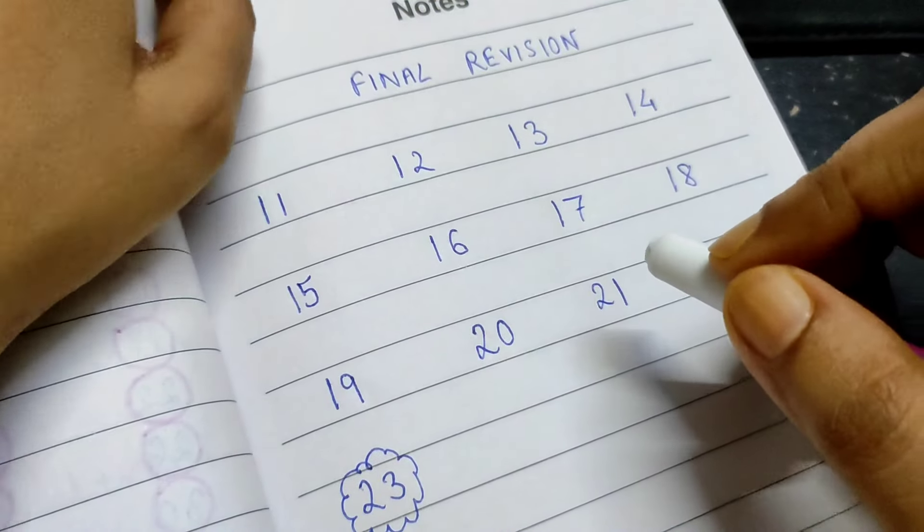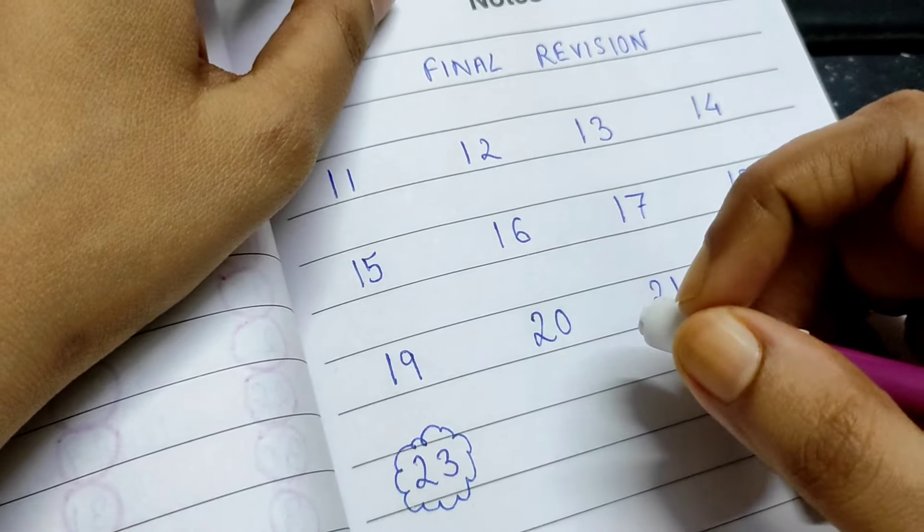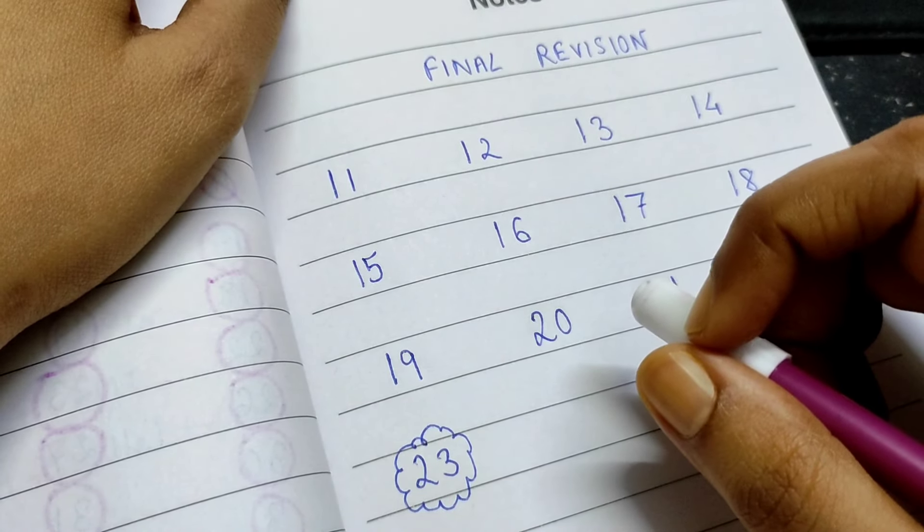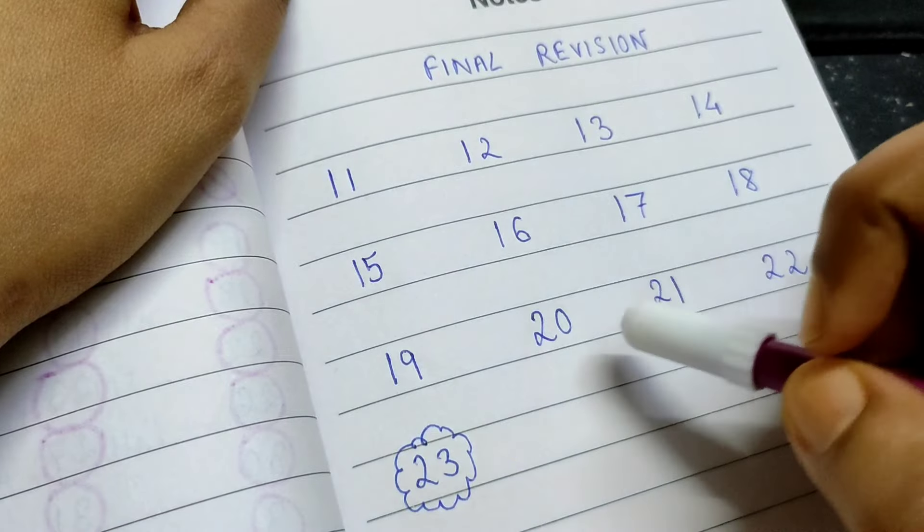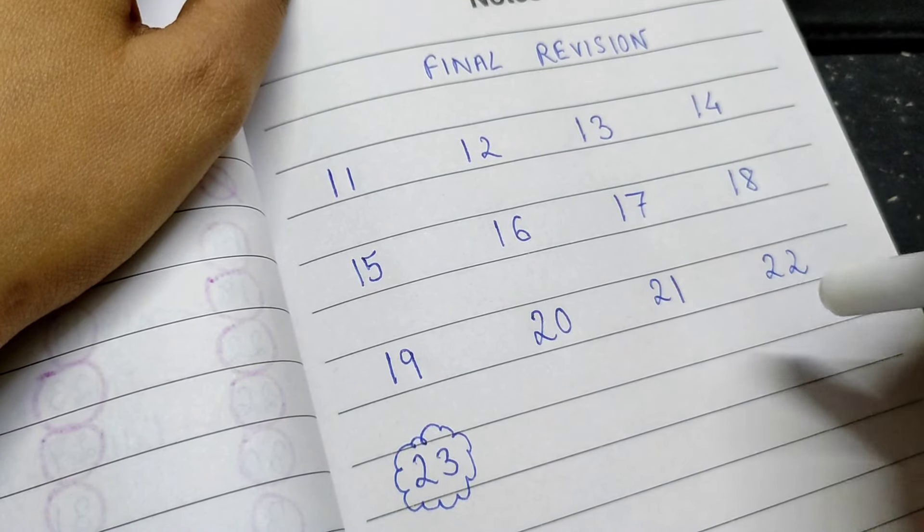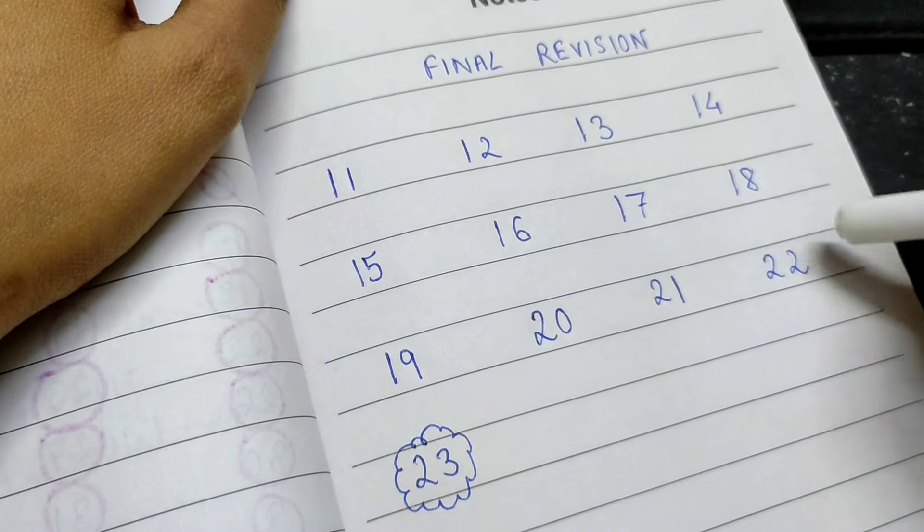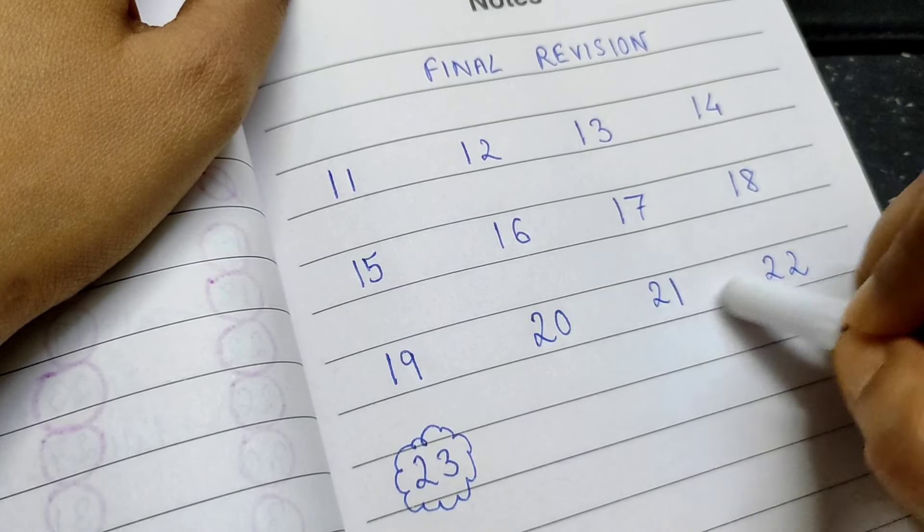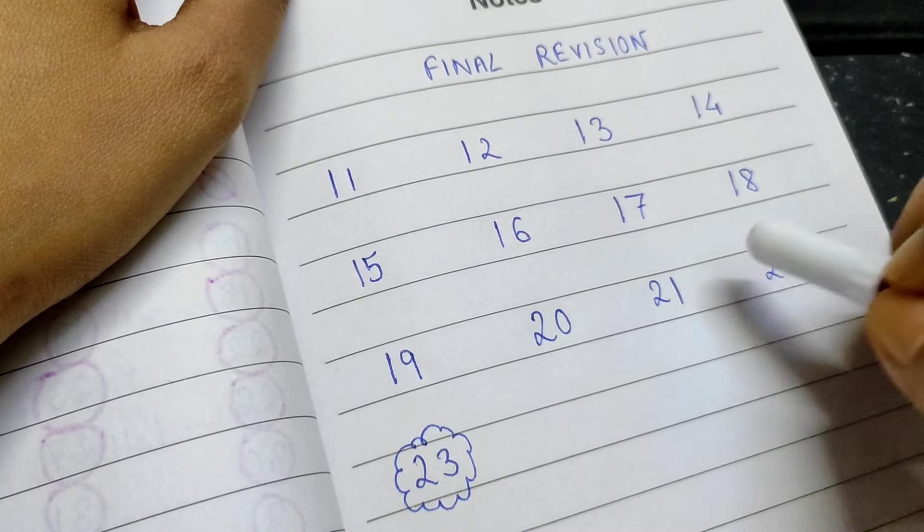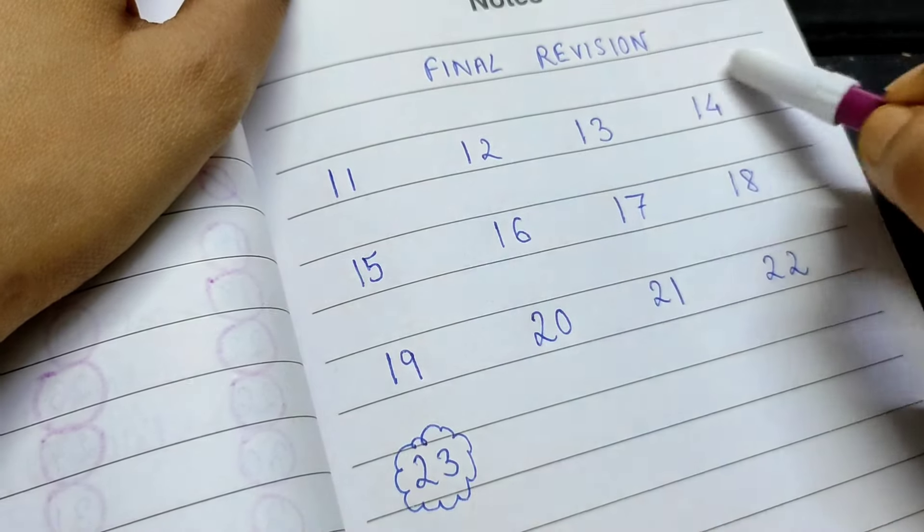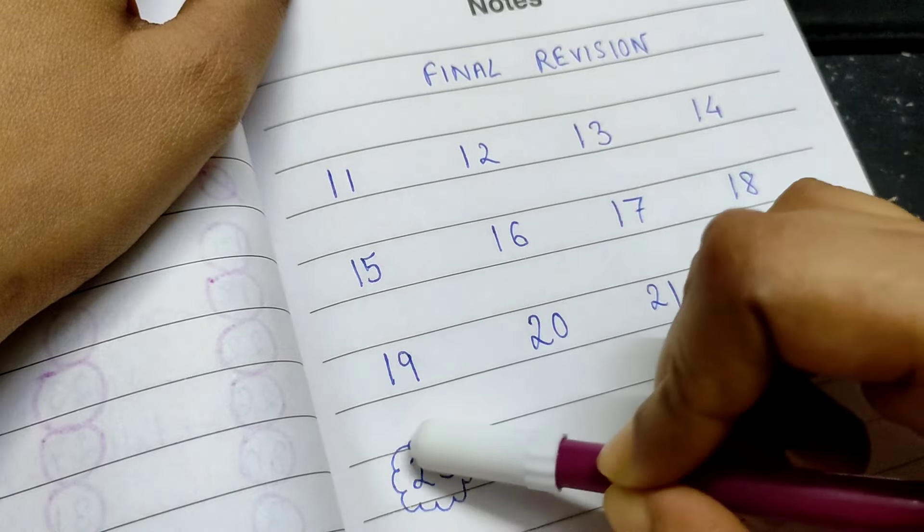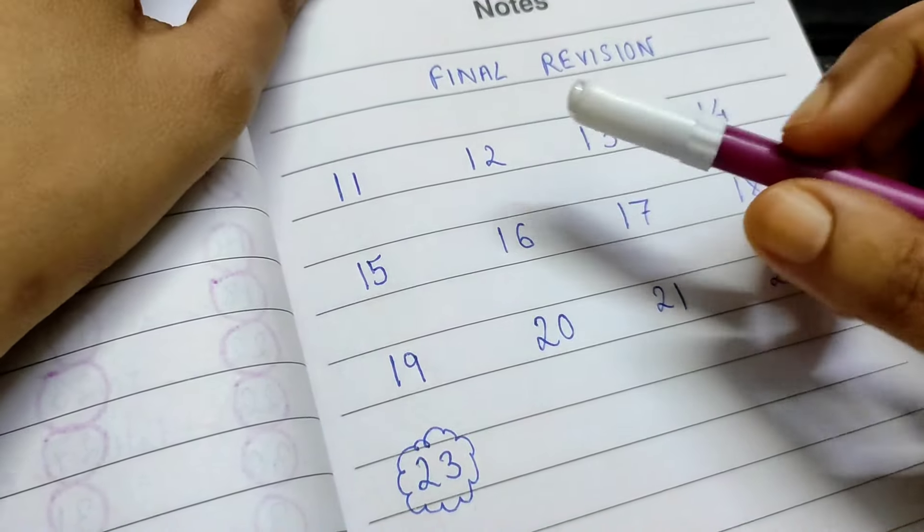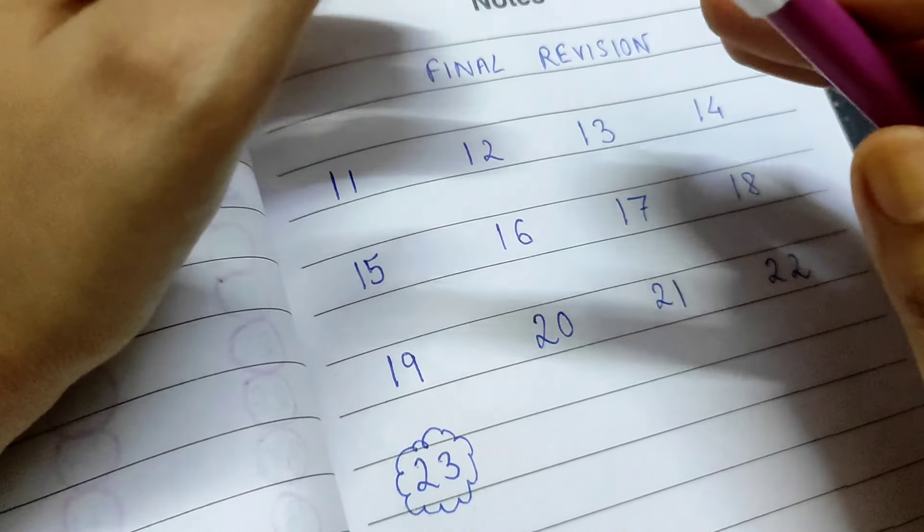So I will go through those topics first, and since we are left with only 12 days, I will leave the last two days, 21st and 22nd. I will not take much stress the last two days. I will make a strong revision plan only till 20th June.